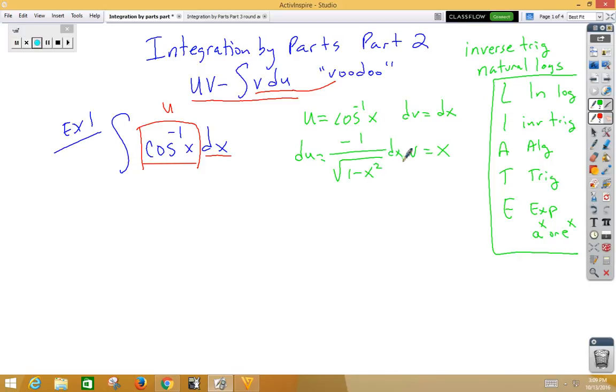We now have all the parts ready for the formula, so let's start. Our first part of the formula is u times v, so we're going to write that as x inverse cosine x. Second part of the formula is minus the integral of v times du. So minus the integral, when we multiply the v to the du, we can go ahead and put negative x over root 1 minus x squared dx.